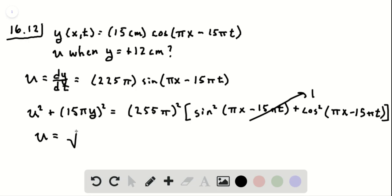We have u squared plus 15 pi y quantity squared equals 225 pi squared. Then u is just going to be the square root of 225 pi squared minus 15 pi y squared.